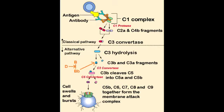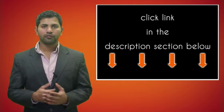This C5 convertase will then cleave C5, forming C5a and C5b. C5a gets released in the system as an anaphylatoxin, whereas C5b will act to initiate formation of the membrane attack complex. C5b combines with C6, C7, C8, and C9 to form the membrane attack complex on the cell membrane of the bacteria. When the membrane attack complex is formed, it makes a hole in the bacterial cell membrane, therefore killing the bacteria.